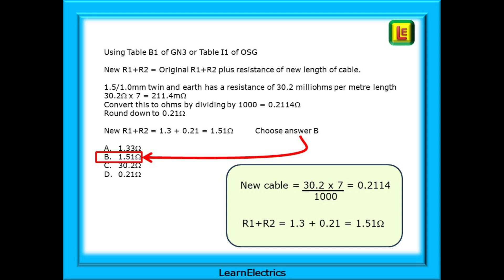We're not finished yet. That is just the new cable. Now we must add that to the resistance of the original. So the new R1 plus R2 is 1.3 ohms plus 0.21 ohms, making 1.51 ohms in total. And we should choose answer B.